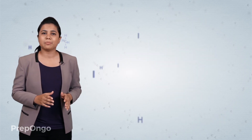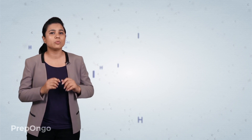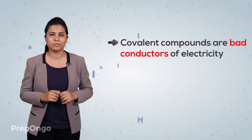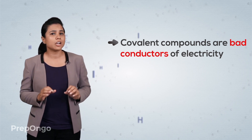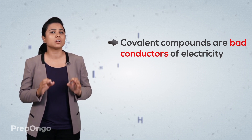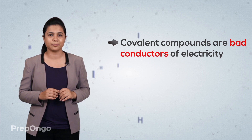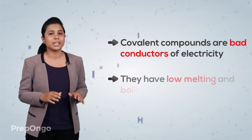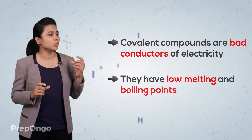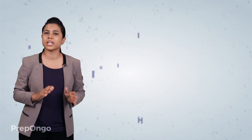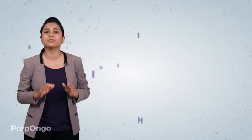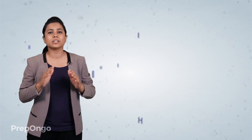Covalent compounds are bad conductors of electricity because they do not contain charged particles or ions which can conduct electricity. They also have low melting and boiling points due to weak intermolecular forces. So we have seen how sharing of electrons forms covalent compounds, and we are going to see the other properties of carbon in our next video.